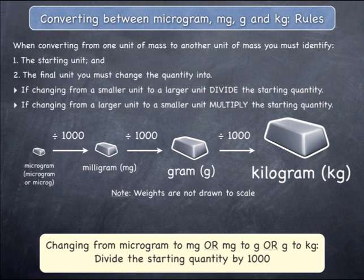In these last three examples, a quantity has been changed from a smaller unit into a larger unit. The information in the yellow box summarises the rule that was applied.